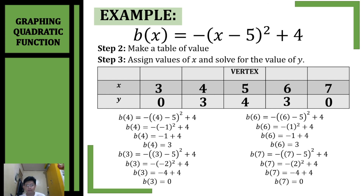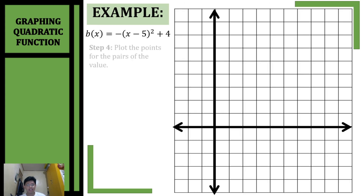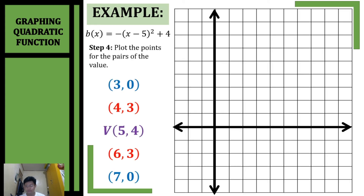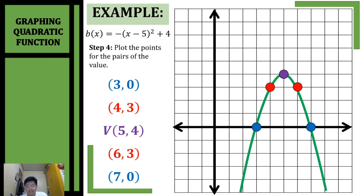After completing your table of values, plot your points on the rectangular coordinate system. Starting with our vertex (5, 4) — located here. Then (4, 3) and (6, 3), and then (3, 0) and (7, 0). Connect your points by drawing a parabola opening downward, and that will be the graph of our quadratic function.